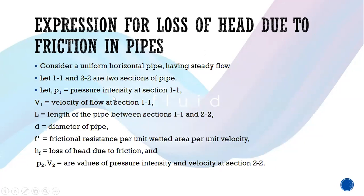The considerations in this derivation: V1 is the velocity of fluid at section 1-1; L is the length of the pipe between section 1-1 and 2-2; D is the diameter; F' is the friction resistance per unit wetted area per unit velocity; HF is the loss of head due to friction; P1, V1 are the pressure intensity and velocity at section 1-1; and P2, V2 are the values at section 2-2.